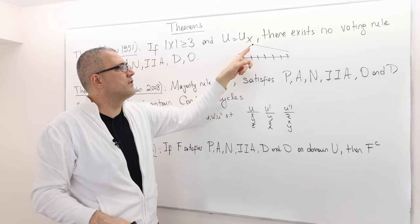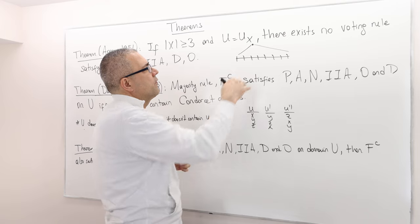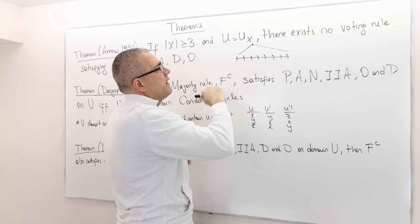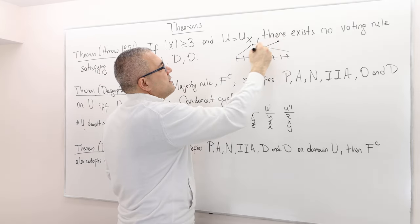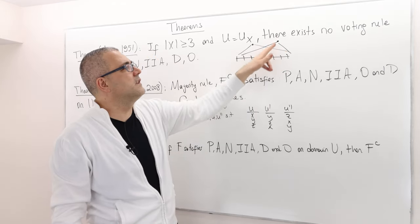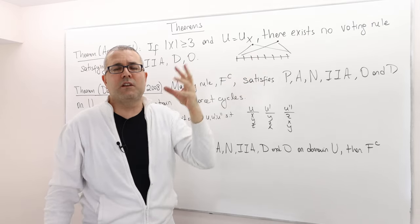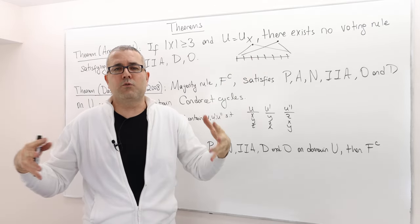Everybody has just one such nice top alternative or best alternative. So let's say this is one agent, this is another agent who has his best alternative, and then as he moves away from his best alternative everything gets worse and worse.